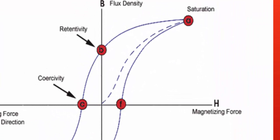When H is reduced to zero, the curve will move from point A to B. After magnetic force getting zero, some amount of magnetic flux remains. This point is also set as the point of retentivity.